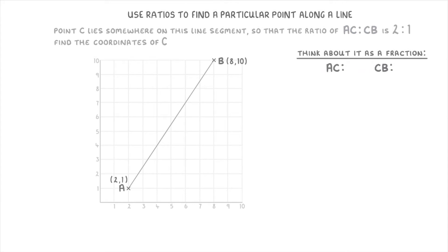In general though, it's more helpful to think about it as a fraction. And to convert ratios into fractions, we just take each of the numbers, so the 2 and the 1, which become the numerators of our fractions.